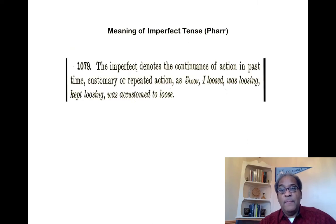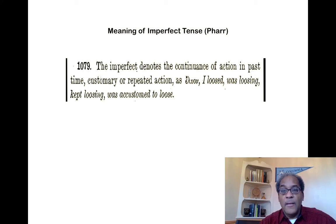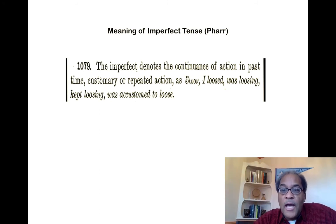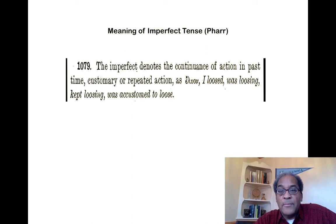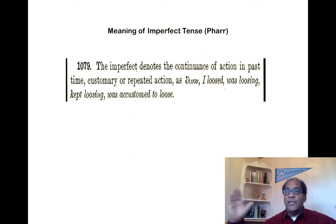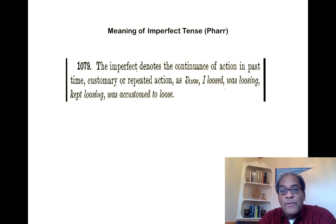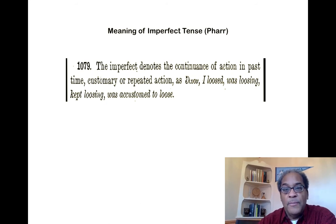What's the meaning of the imperfect? The imperfect tense denotes the continuance of an action in past time, customary action, or repeated action. So eluon means 'I was loosing' — it would show someone loosening over a period of time, like a video. Eluon: 'I loosed,' 'I was loosing,' 'I kept loosing,' or 'I was accustomed to loose.' It represents the action the way a video does, as opposed to a snapshot — and a snapshot will be represented by the aorist tense, which we're going to be learning next.